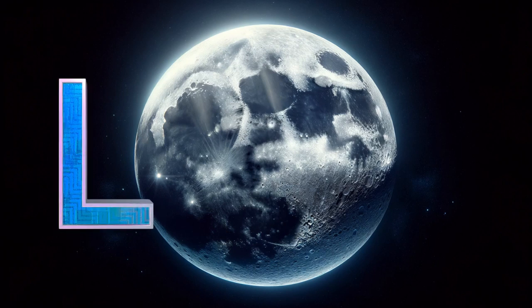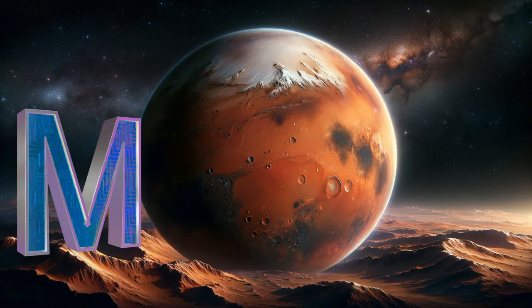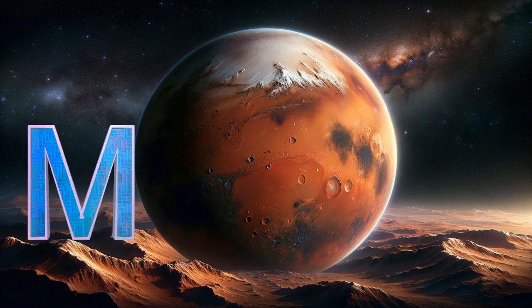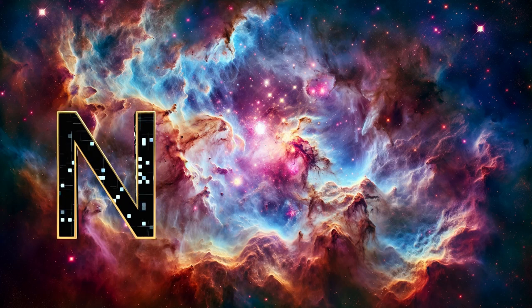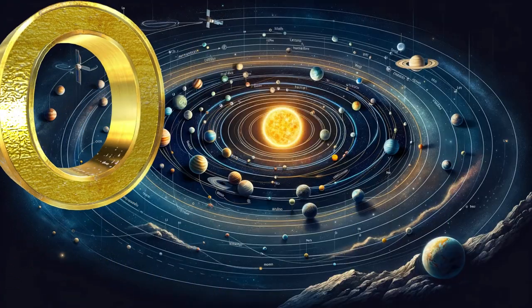M is for Mars, where rovers roll. N is for nebula, a star forming hole. O is for orbit, round and round we go.